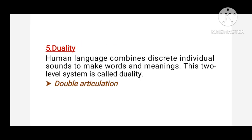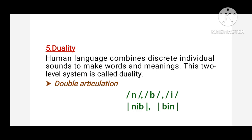The fifth property of language is duality. Duality in human language means humans have limited discrete sounds or phonemes, but these sounds can be combined in different ways to create an infinite number of words, expressions, and utterances. For example, in English we have discrete letters such as N, B, and I, but when these letters are combined together they give us different words like 'nib', 'ben', and many more.